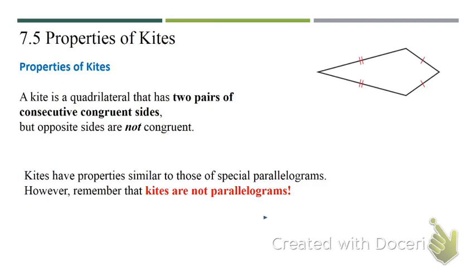Properties of kites. A kite is a quadrilateral that has two pairs of consecutive congruent sides, but opposite sides are not congruent. Kites have properties similar to those of special parallelograms; however, remember that kites are not parallelograms — they have no parallel sides.